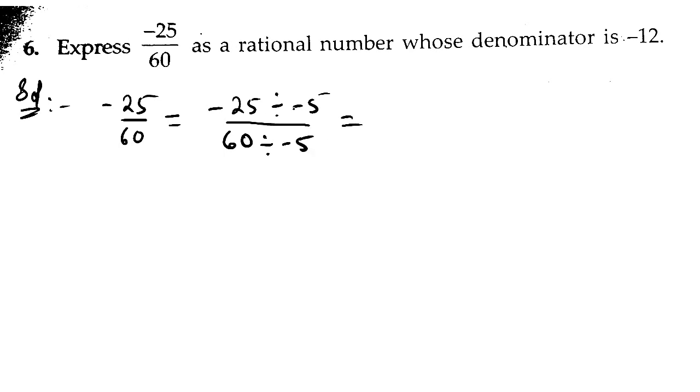So you will get minus minus will get cancelled. Minus minus cancel, 5 ones are 5, so we will get 5.